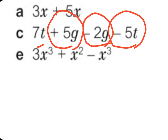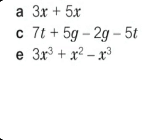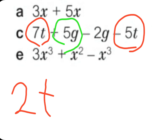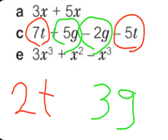The first term, 7t, has a plus sign but we don't write it at the beginning. Now let's take the same variables together: 7t and negative 5t gives us 7 minus 5, which equals 2t. Then for the other variable: 5g minus 2g equals 3g. So the answer is 2t plus 3g. Remember to put the correct sign next to each number.